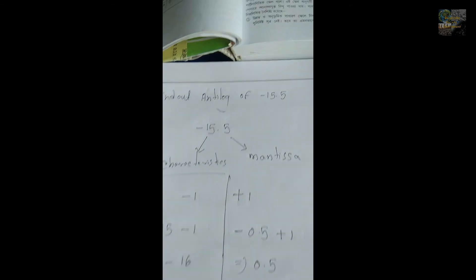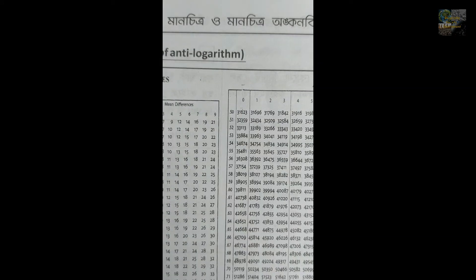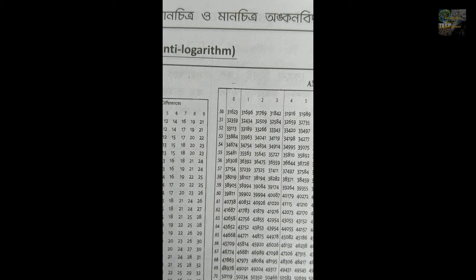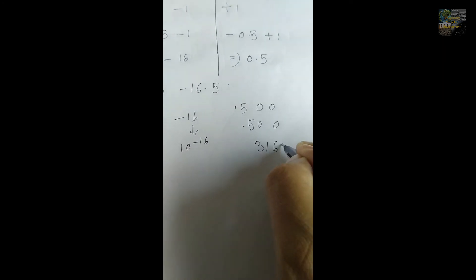I have an antilog table. You can see that 0.500 has the value 3.1623. I am writing over here 3.1623.